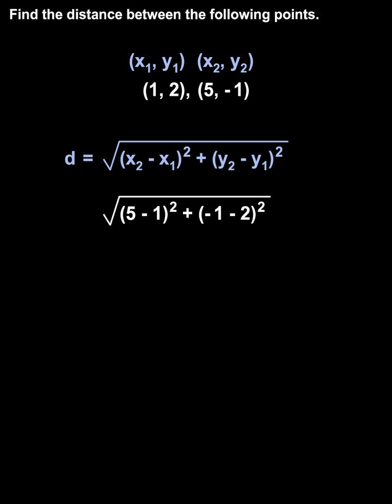Next, we simplify inside the parentheses. 5 minus 1 is 4, and -1 minus 2 is -3. So we have the square root of 4² + (-3)².